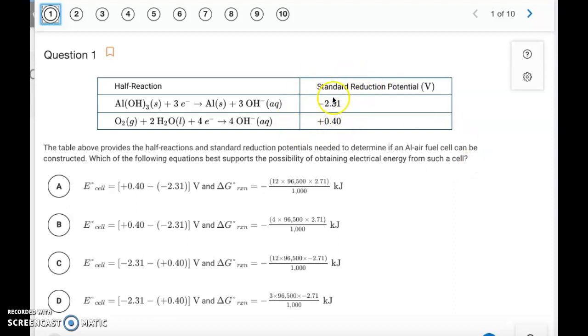So one of these reactions needs to be flipped. To get electrical energy, we want the voltage to be positive. So we're going to flip this aluminum reaction and make it a positive 2.31. Looking at the cell potentials, A and B represent that, where we're flipping that negative 2.31 to a positive value. So that's the first equation. That's going to eliminate C and D, but we still have between A and B.